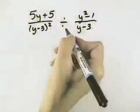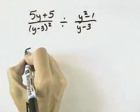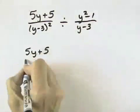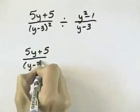Here we want to perform the indicated operation of division and simplify our answer. To do that, what we want to do, because we have fractions, is convert the division to multiplication.